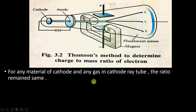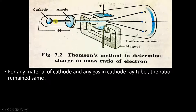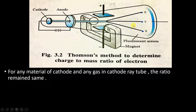Importantly, for any material of cathode and any gas in the cathode ray tube, the ratio remained the same. No matter which element the cathode was made of or which gas was used in the tube, the ratio was always 1.75 × 10¹¹ C/kg. This constant value led to two important conclusions.